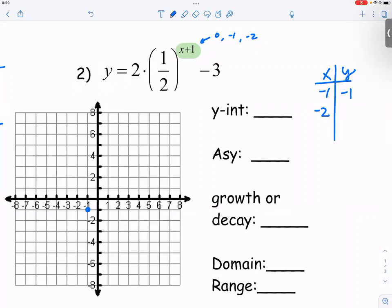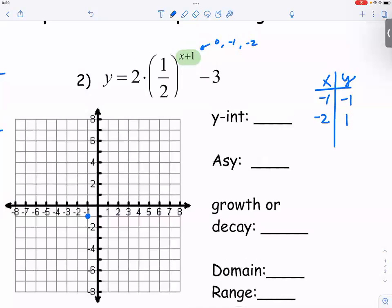Two times two is four. Four minus three is one. So at negative two, it is one.